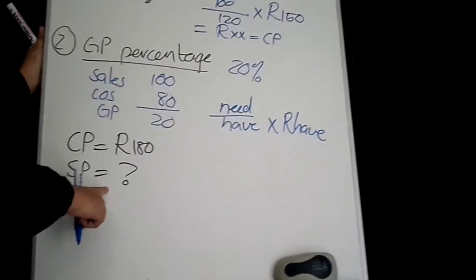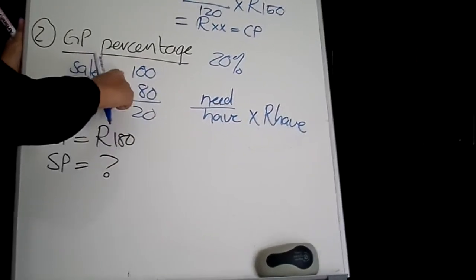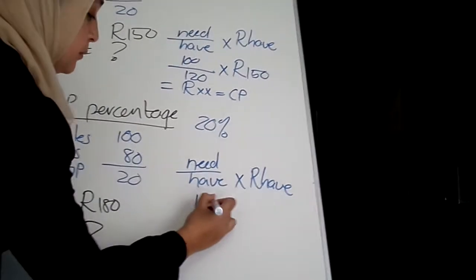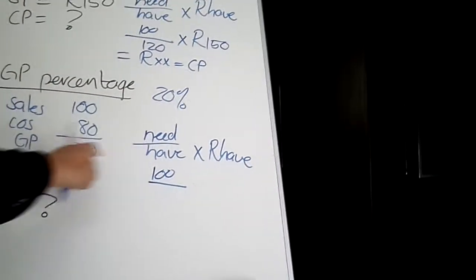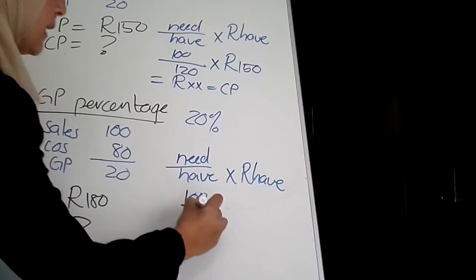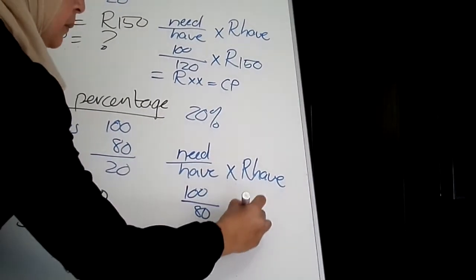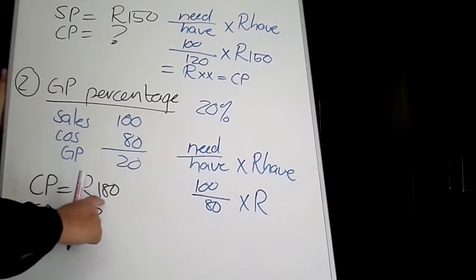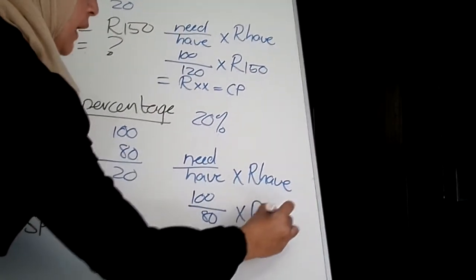So what you need in this case is the selling price. Selling price according to your trading statement is 100. What you have is the cost price. Cost price according to your trading statement is 80. And then you multiply by the Rand value which was given to you as cost price of R180.